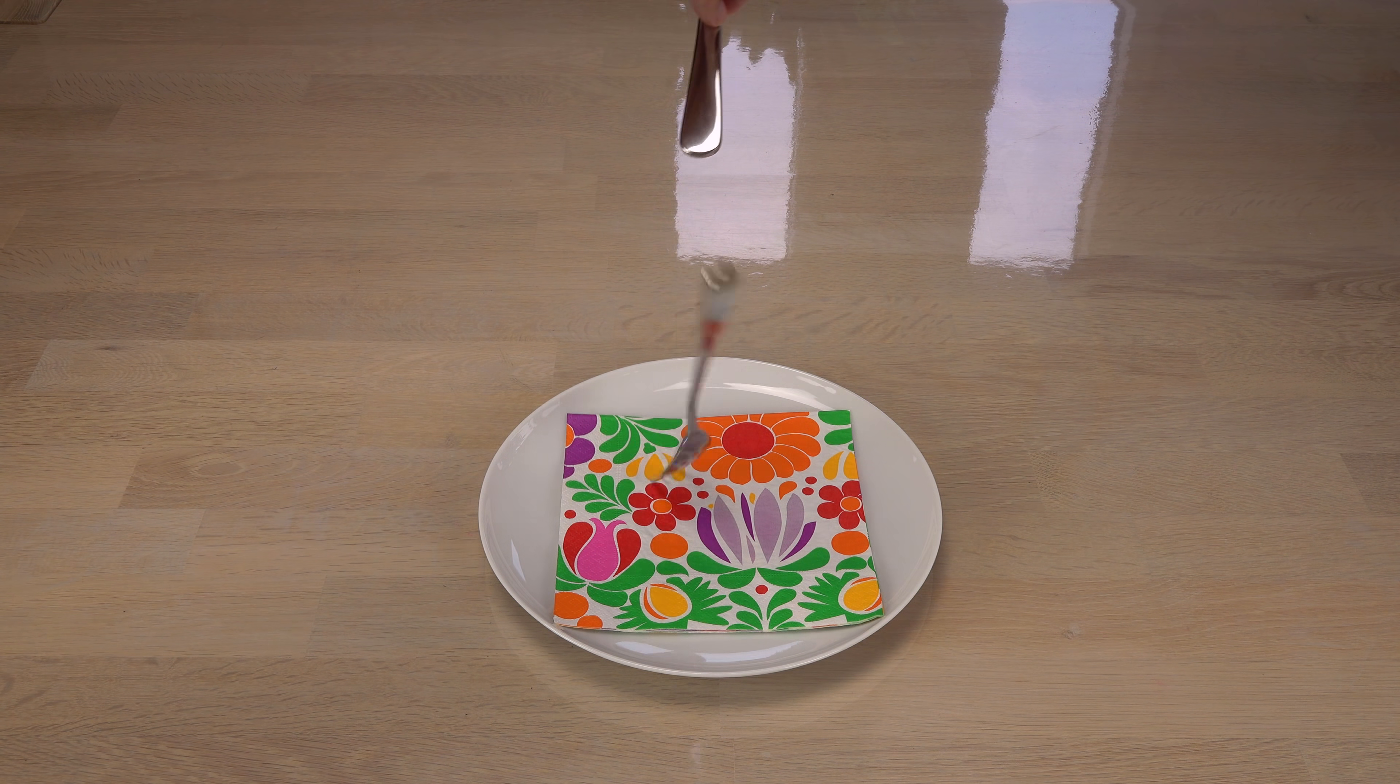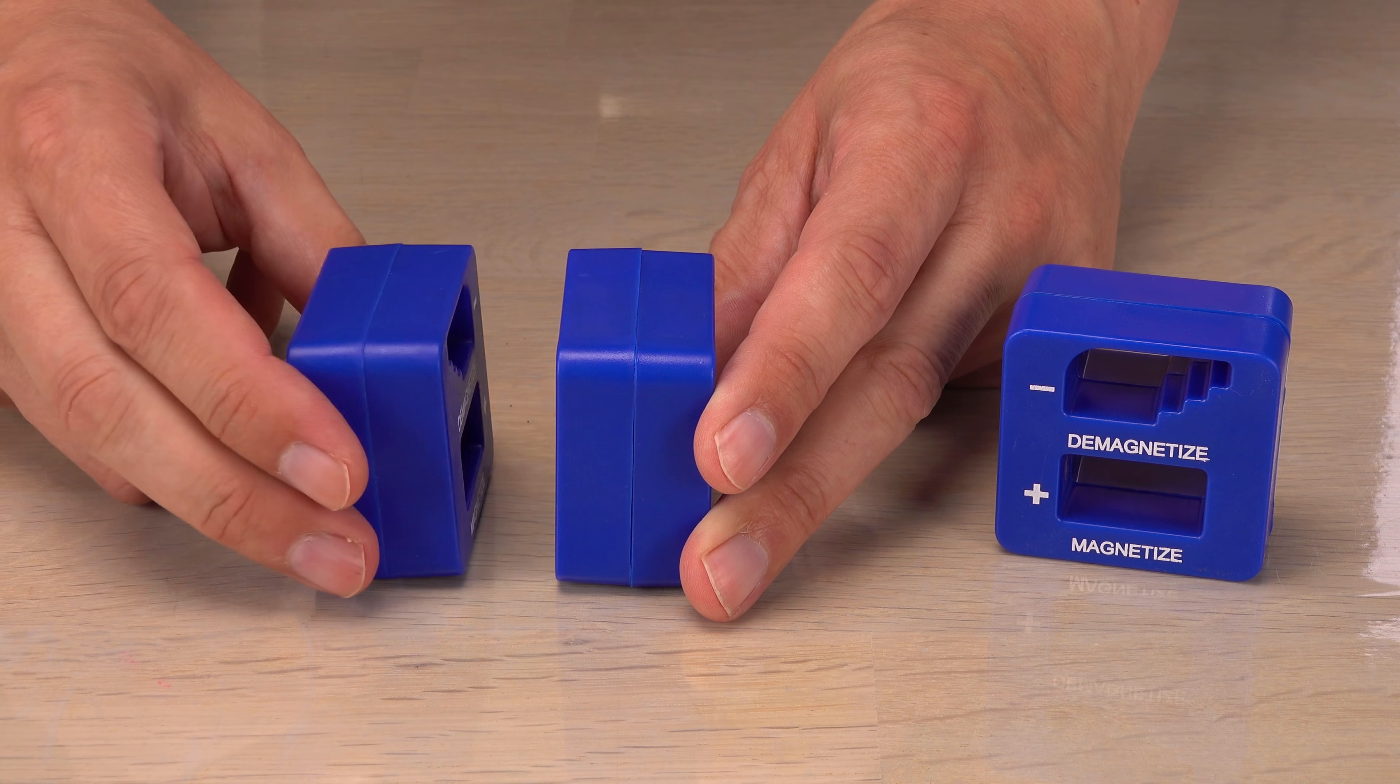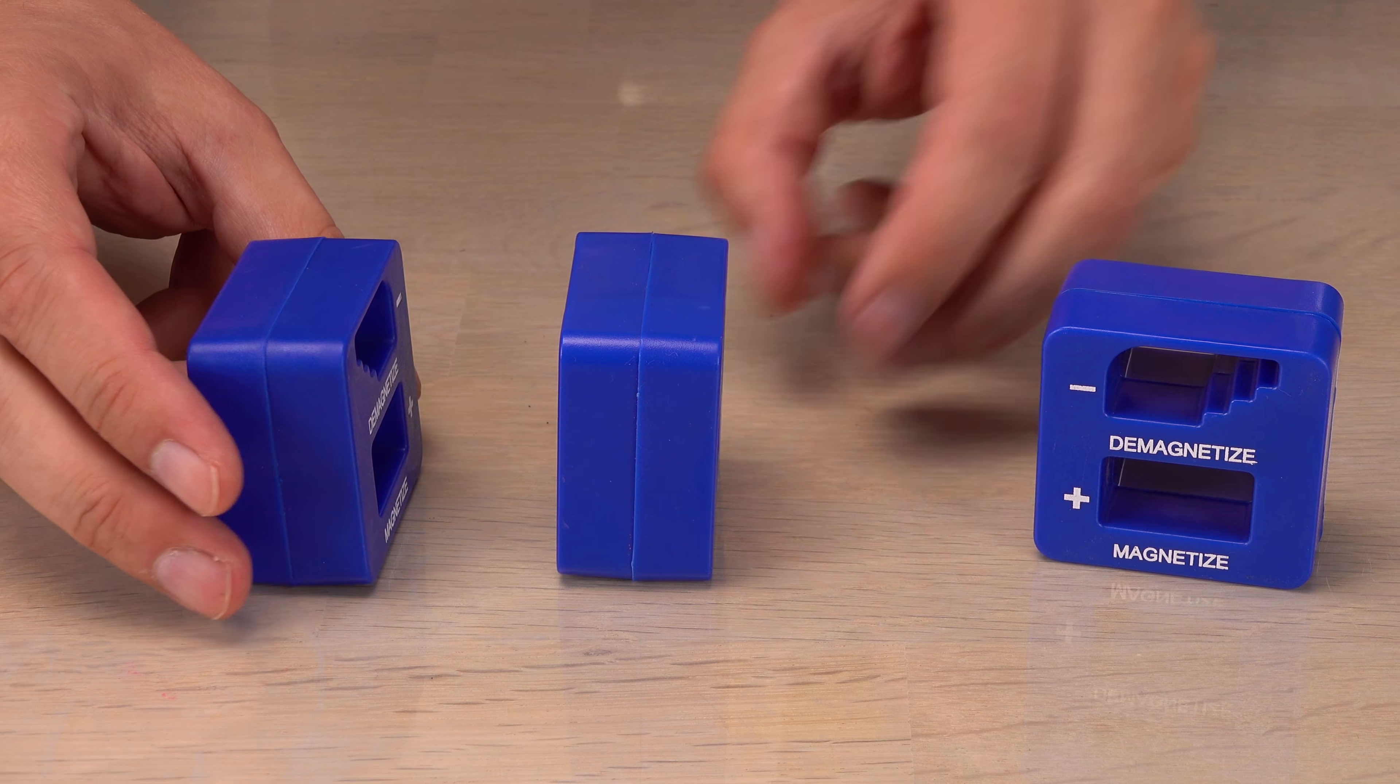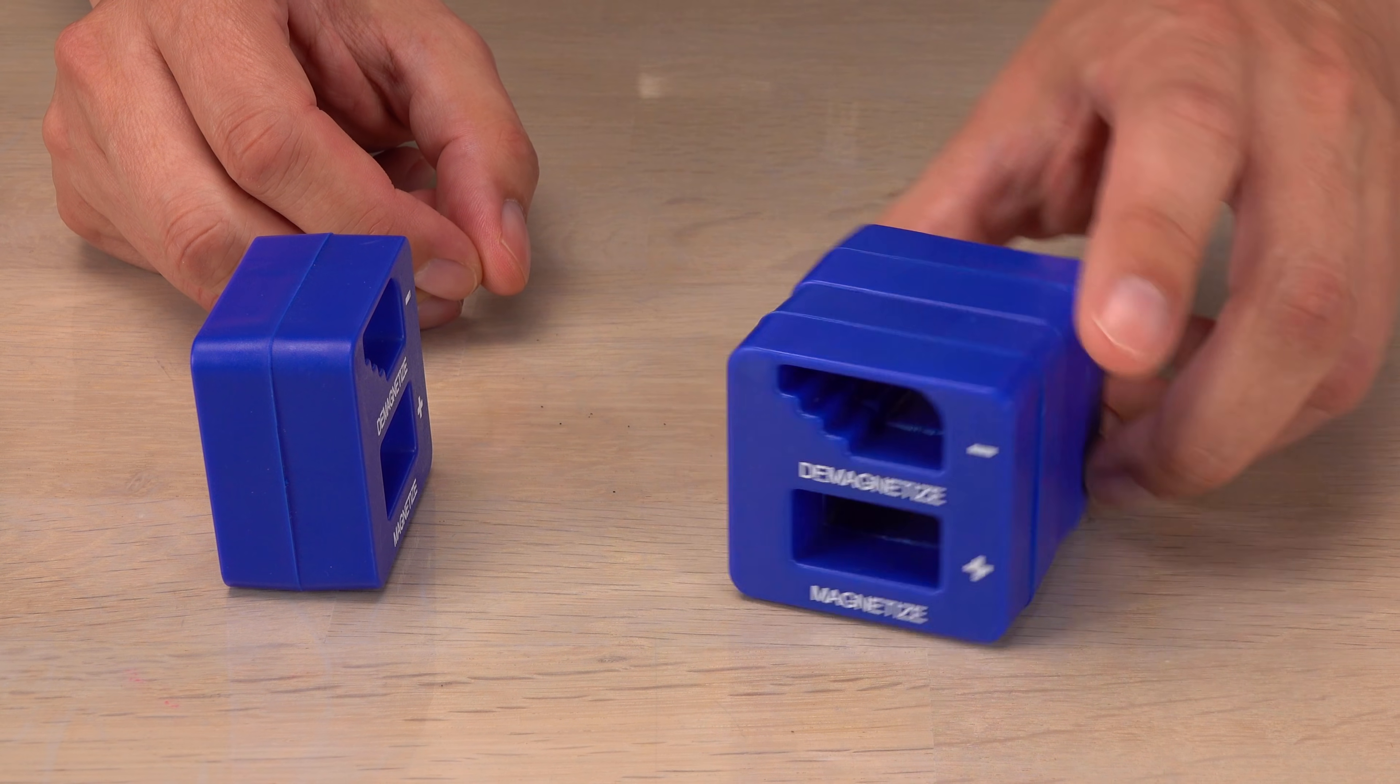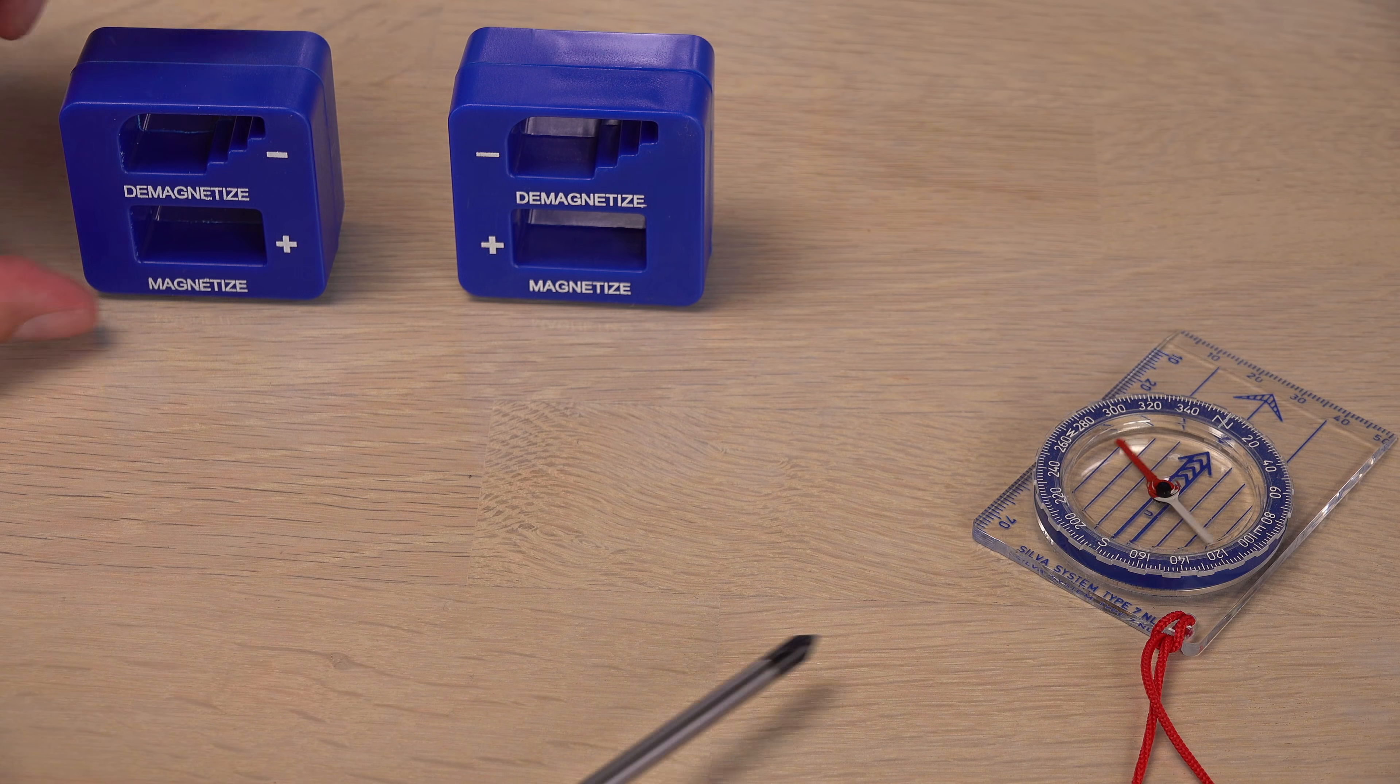But it is rather annoying. In this video I'll attempt to demagnetize the cutlery with a demagnetizer tool. And since I wonder how this tool could possibly cancel a magnetic field, I'll also take a closer look at how it works.